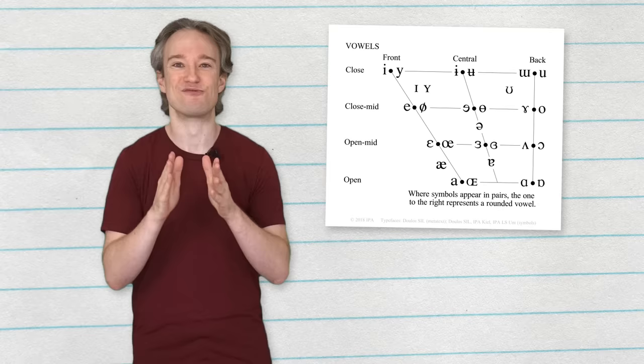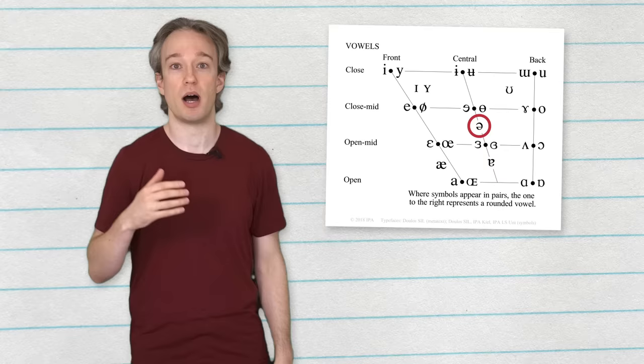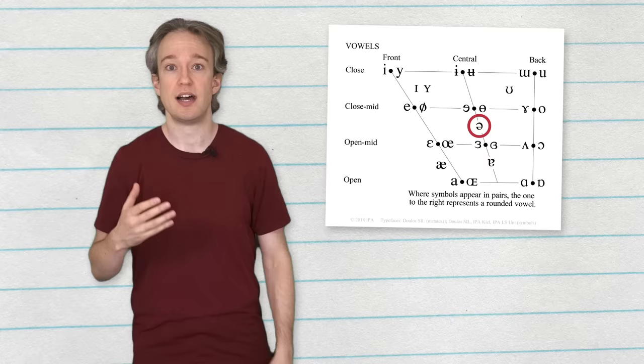Anyway, sitting right in the middle of that chart is that UH from about, represented by the schwa. It is central, everything just kind of sitting in the middle. It's the vowel that requires the least effort. UH is the vowel you use when you've got to make a sound, but you don't know what to say.